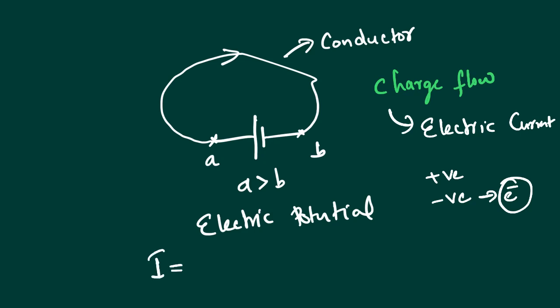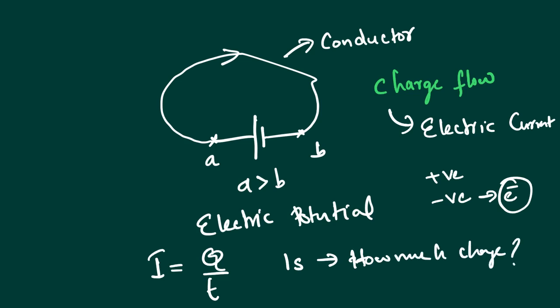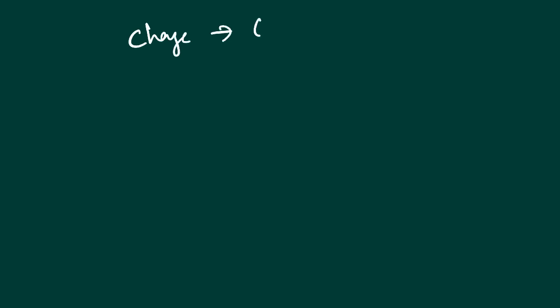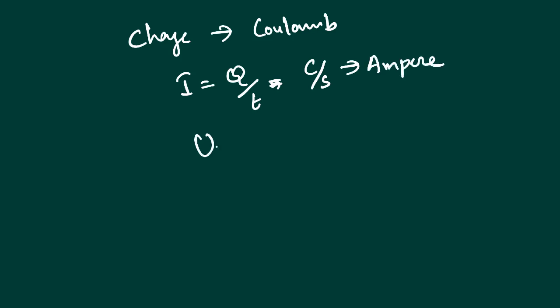Electric current is defined as I equals Q divided by T — that is, how much charge flows in one second. The unit of charge is coulombs, so coulombs per second is the unit of electric current, which is called the ampere.